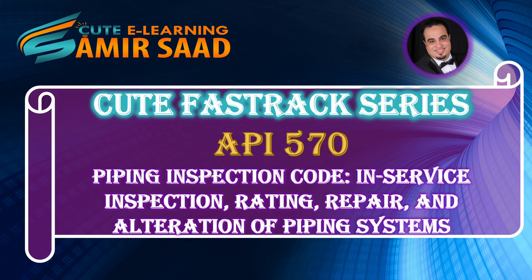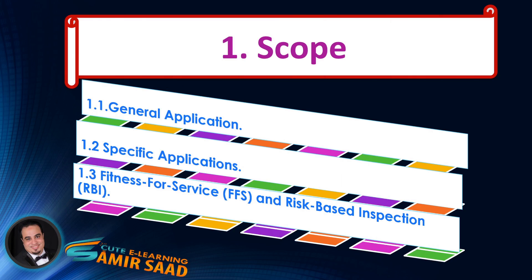Welcome to the Qt Fast Track Series for API 570 Piping Inspection Code — in-service inspection, rating, repair, and alteration of piping systems. In this lecture, we will discuss Clause 1, Scope. This section provides an overview of the general structure of the text in Clause 1. The following is a list of all sub-clauses as listed in the Table of Contents, and we highlight important information contained in Clause 1 accompanied by the sub-clauses.